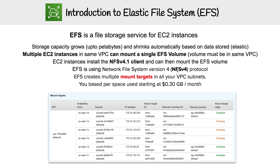EFS will create multiple targets in all your VPC subnets. This is how it's able to allow you to mount from different subnets or different Availability Zones. We'll just see it create a bunch of mount points, and that's what you will mount.